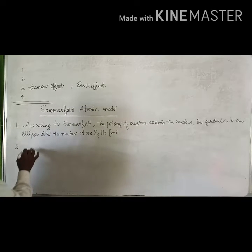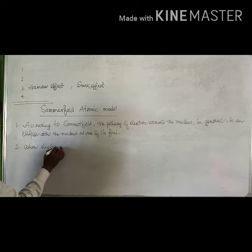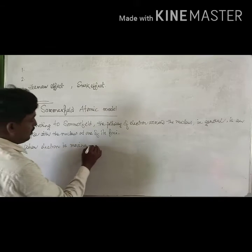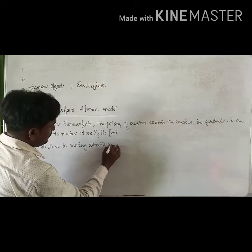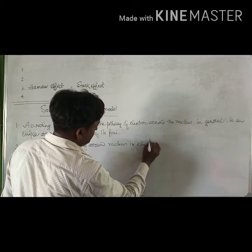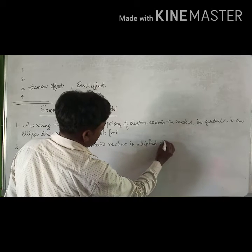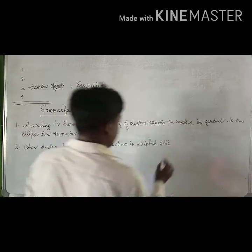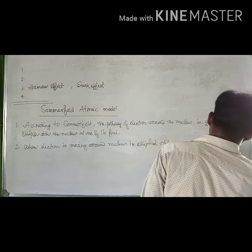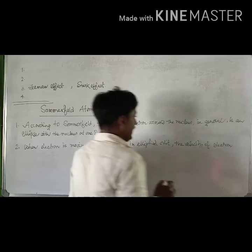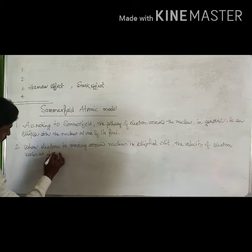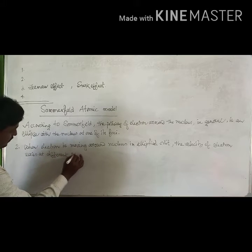Number 2: When the electron is moving around the nucleus in an elliptical orbit, the velocity of electron varies at different parts.